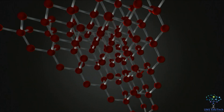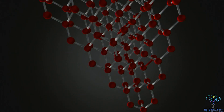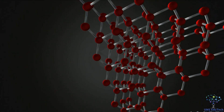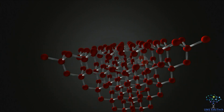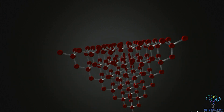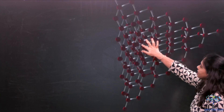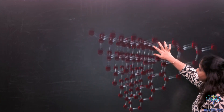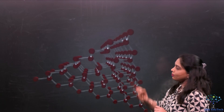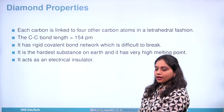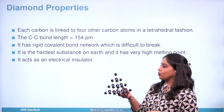You can see here that all the carbon atoms are arranged in a tetrahedral fashion. Now we are going to study the structural arrangement and the various properties of diamond with the help of a real 3D picture.